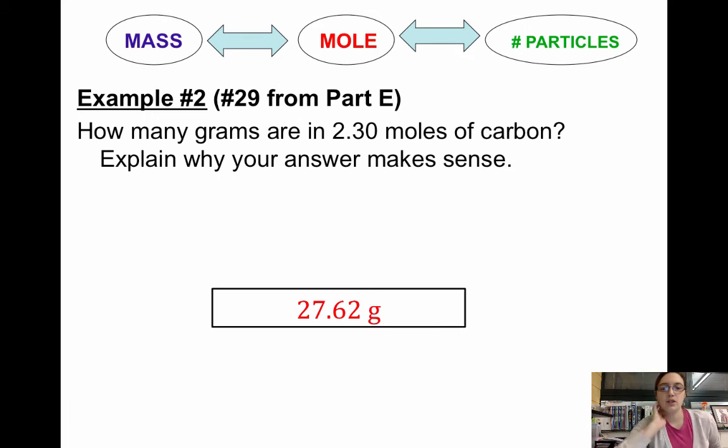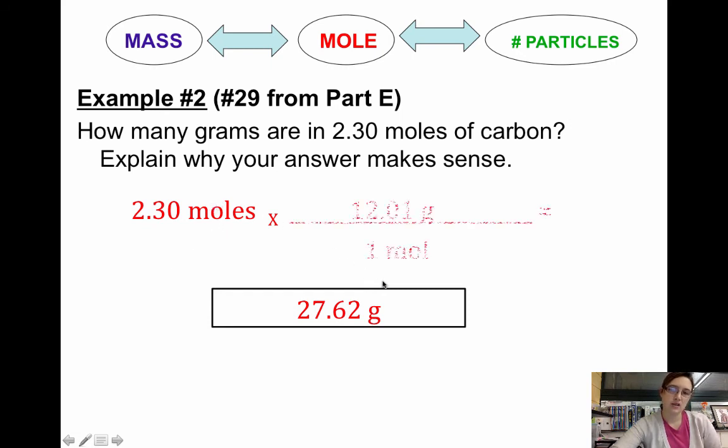So example 2 is number 29 in Part E, and this is how many grams are in 2.3 moles of carbon. So again, start with your given, you're given 2.3 moles. So we're starting here in the middle, we're trying to go out to grams. Well if you're going between moles and grams, you're going to use molar mass, and you use the molar mass of whatever substance you're working with, and in this case it's carbon. So I have moles on the top, which means I need moles to cancel. So I'm going to put moles on the bottom.